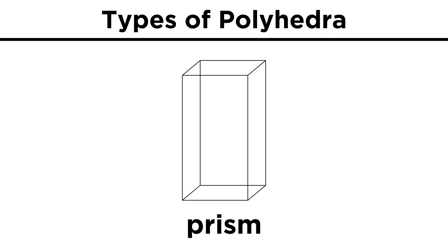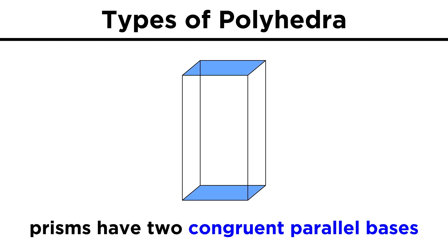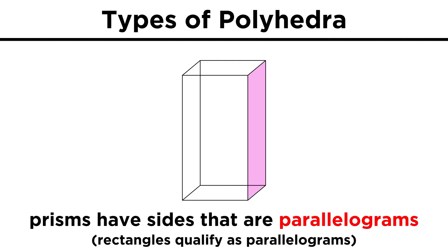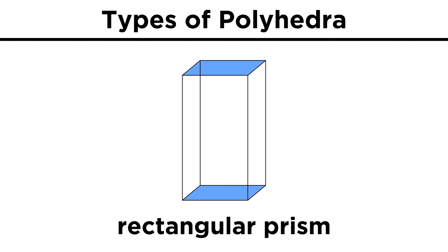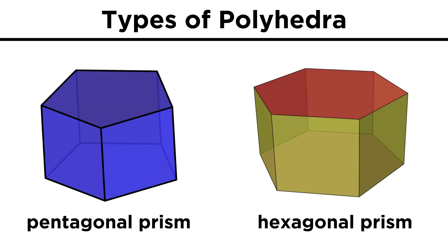The first type of polyhedron we will look at is the prism. This is a shape with two congruent parallel bases of some type of polygon, and all the other shapes are parallelograms. A prism is named for the shape of its bases. This is a rectangular prism. We can see the bases and all the rectangular sides, which qualify as parallelograms. We can have pentagonal and hexagonal prisms as well.